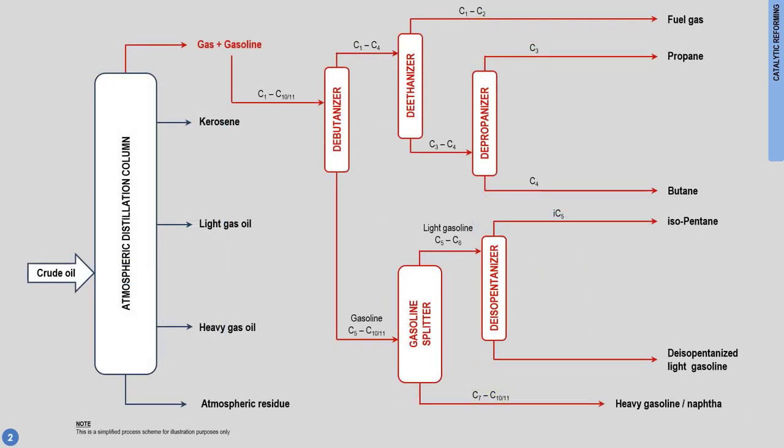Shown now on screen is a simplified process scheme for the gas and gasoline cuts treating plant. The feedstock for a catalytic reformer is heavy gasoline or heavy naphtha, recovered at the bottom of the gasoline splitter, as highlighted here. This feed is essentially made of C7 to C11 hydrocarbons.